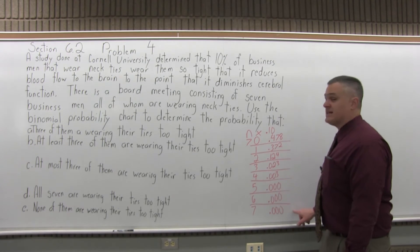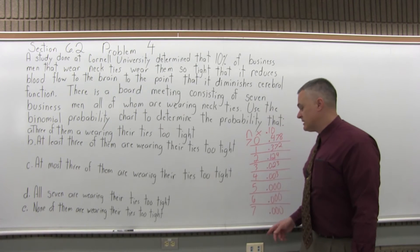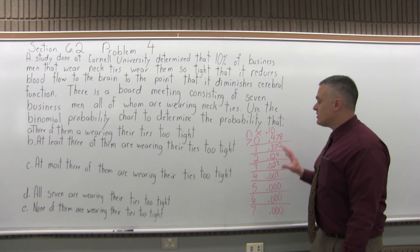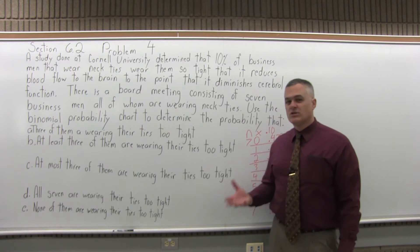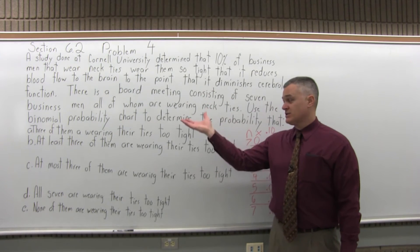If you go enough decimal places, there will be some non-zero digits, so it's very unlikely, but it's not truly a zero probability. Now that we have that information, which you can look up in that binomial probability chart, it's at the end of the notes from section 6.2.